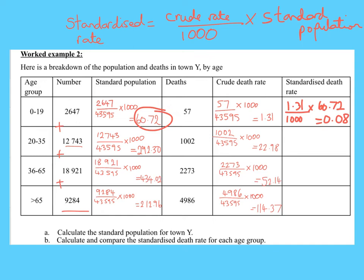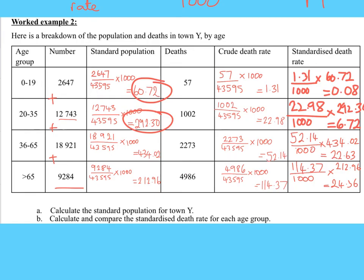For the 20–35 group, the crude rate is 22.98, divided by 1,000 and multiplied by the standard population of 292.30, giving a standardised death rate of 6.72. Pause the video to complete the remaining two groups. Looking at the results, the standardised death rate is very low for under-20s and still low for 20–35s. The highest is for over-65s, as expected, though the 36–65 group is almost as high — nearly as many people in that bracket are dying as in the over-65 bracket.